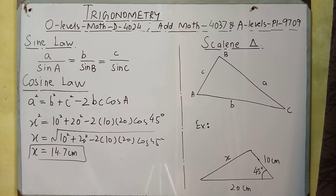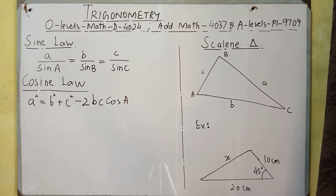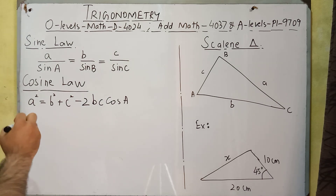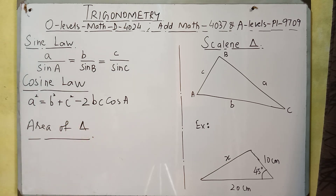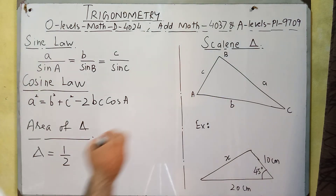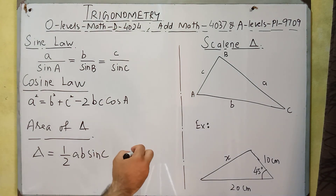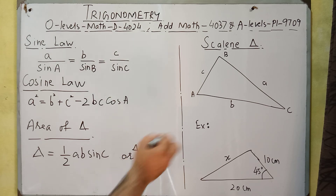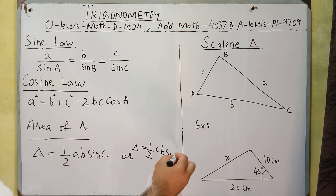This was the cosine law. Now we have the area of a triangle in terms of trigonometric identities. Area equals one-half times the product of any two sides, times the sine of the angle between them. For example: Area = ½ × a × b × sin C, or equivalently ½ × c × b × sin A.